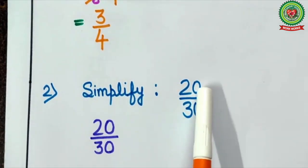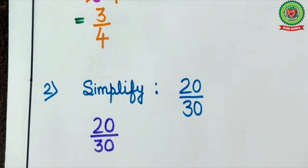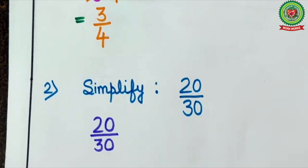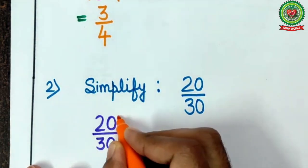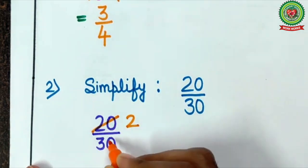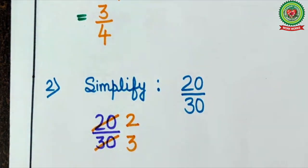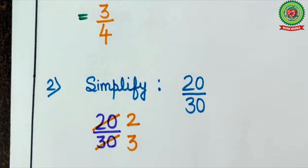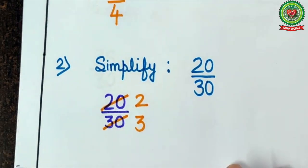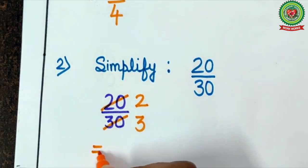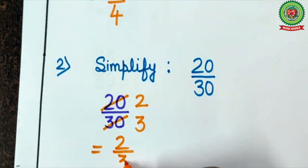Let's see one more example: simplify 20 upon 30. Here you should remember divisibility rules. The last digits are 0, which means they come in the table of 10. So 10 times 2 is 20, and 10 times 3 is 30. Now 2 and 3 are prime numbers, so the common factor between them is only 1. Therefore 2 upon 3 is the lowest term of 20 upon 30.